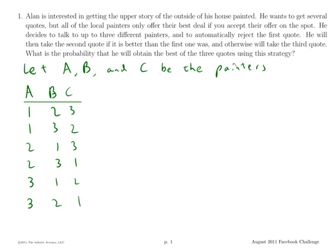We have three painters, so there are three factorial, or six ways, that we can list all these different orders.